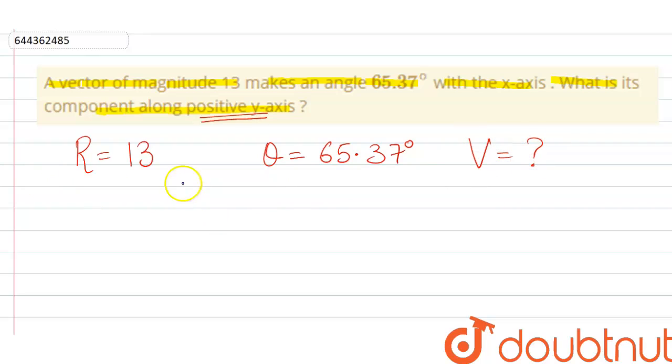Now the formula for vertical component is given: V equals R sine theta. That means 13 into sine 65.37 degrees.